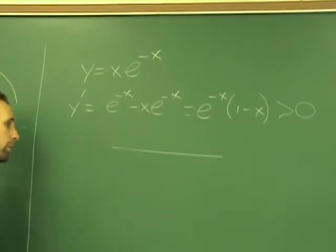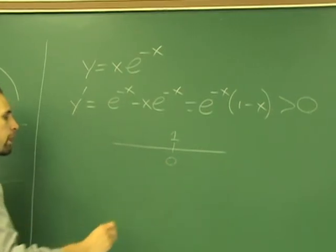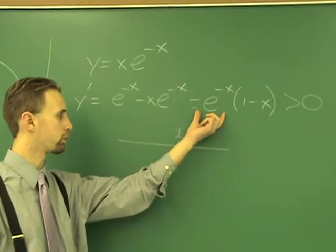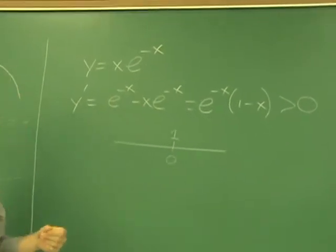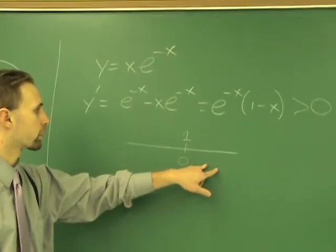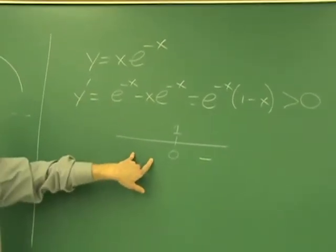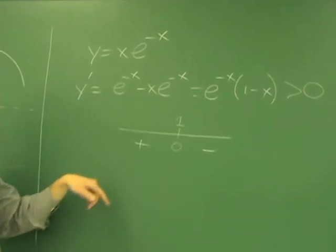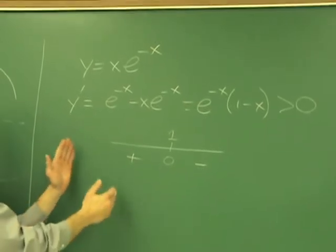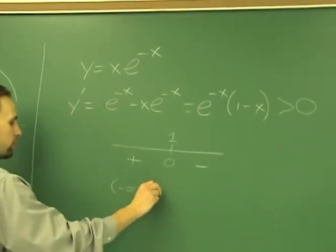Draw the sign chart. y prime is zero when x equals one. The exponential factor does not contribute any more zeros because it's always positive. Picking a number greater than one makes the whole expression negative. Picking a number less than one gives a positive value. So the original function is increasing from negative infinity to one, because its derivative is positive on that interval.